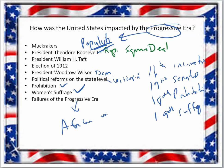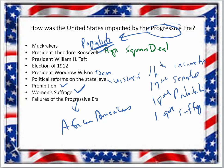Failures of the Progressive Era: it did nothing for African Americans — no progress at all. The two leading African Americans at this time were Booker T. Washington, who believed in a more patient approach, and W.E.B. Du Bois, who was more radical.